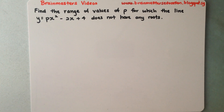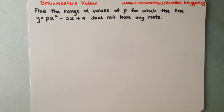So this is the question: find the range of values of p for which the line y equals px squared minus 2x plus 4 does not have any roots.